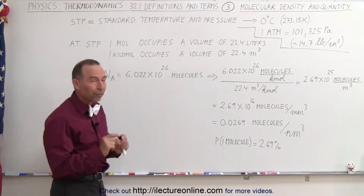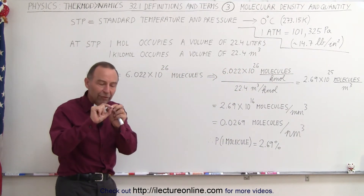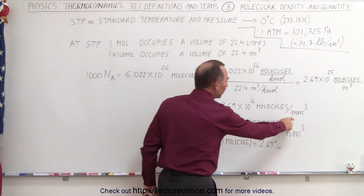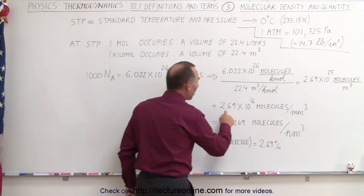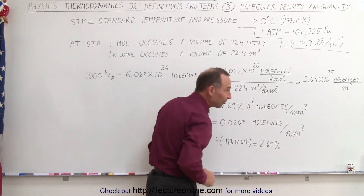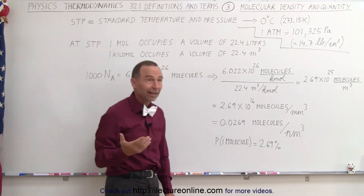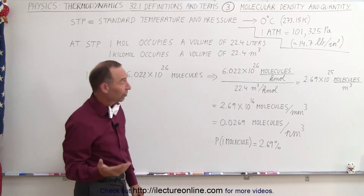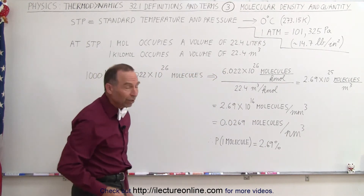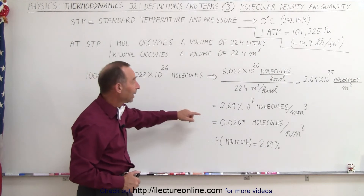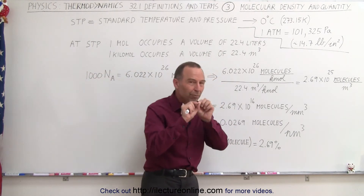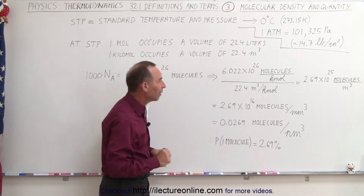Now, what happens when you only take a very small volume, like a cubic millimeter? Then the number of molecules is still very substantial — 10 to the 16th. Well, 10 to the 12th is a trillion. So we have more than a thousand trillion molecules in just a small cubic millimeter of space.